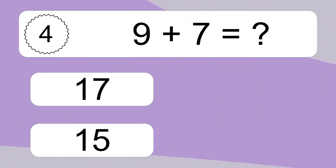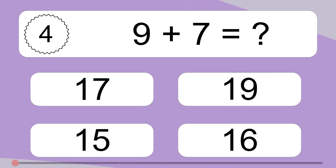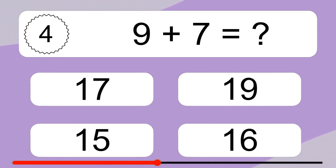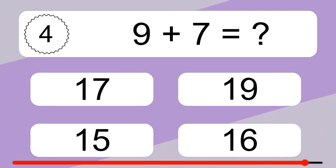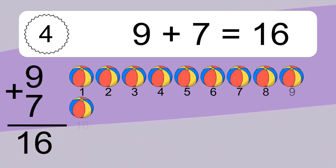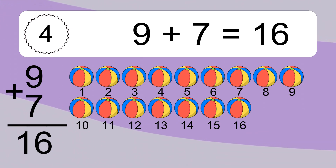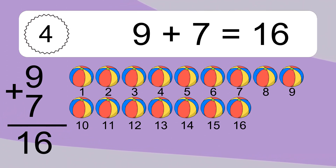9 plus 7 equals what? 9 plus 7 equals 16. Let's count it. 1, 2, 3, 4, 5, 6, 7, 8, 9, 10, 11, 12, 13, 14, 15, 16.